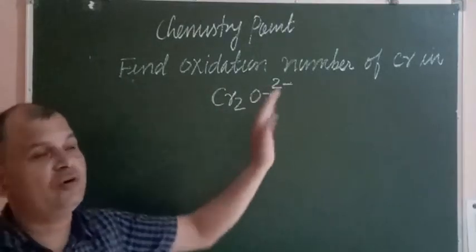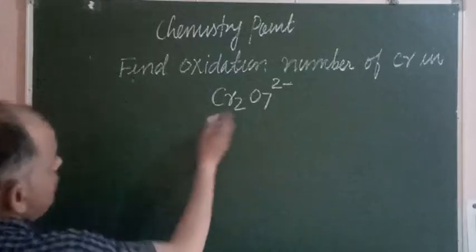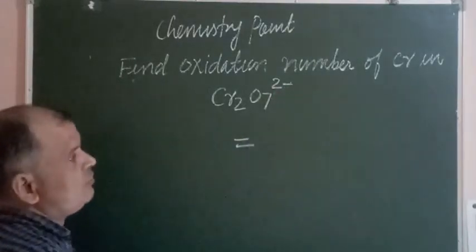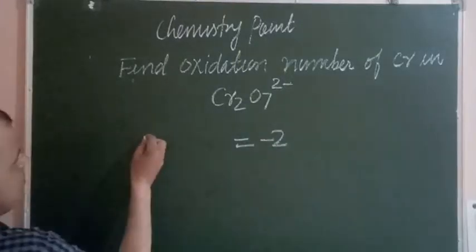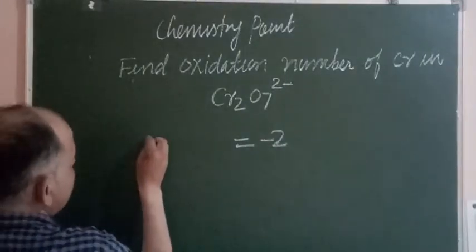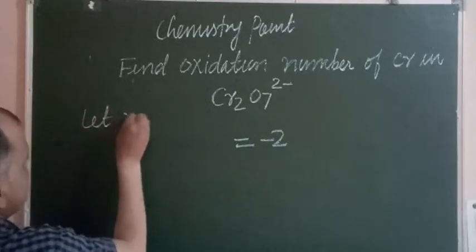So students, first we write its ionization number which is 2-. So we put here 2-. Next, x is the oxidation number of Cr, so 2x.